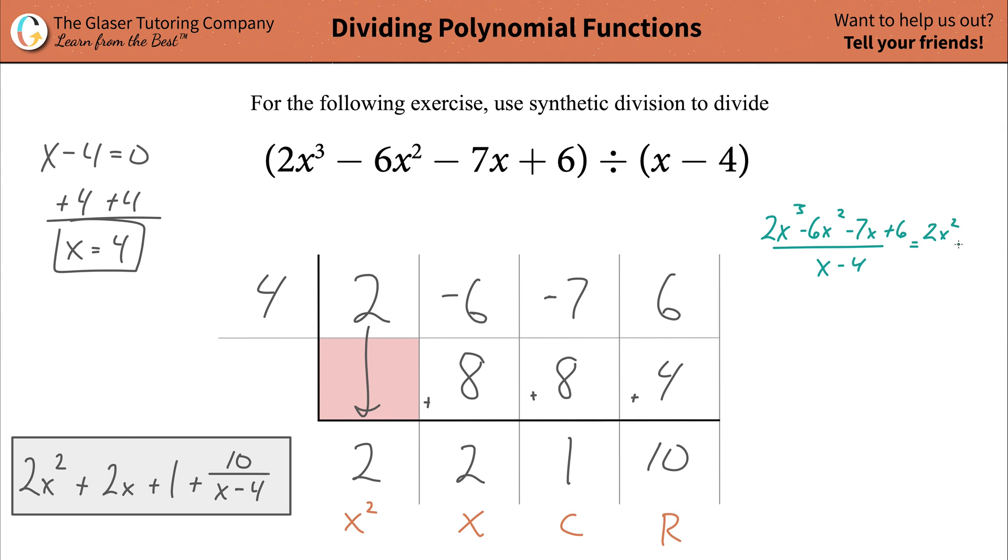All you have to do now is make up an x value. Let's use x equals 0 to make it simple. And to quickly do this, everywhere you have an x, if it's multiplied, you're just going to get rid of it.